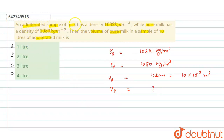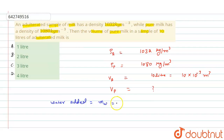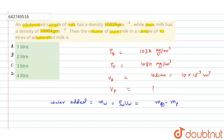The adulterated sample of milk is made of volume of pure milk plus water. So the mass of water added, m_w = ρ_w × V_w, equals the mass of the adulterated sample minus the mass of the pure milk.